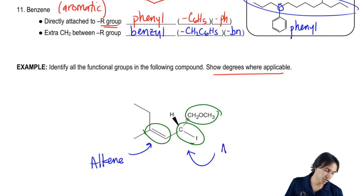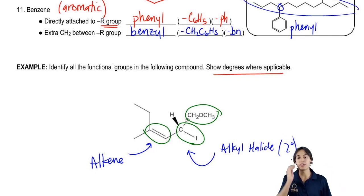So this would be an alkyl halide and particularly it would be a secondary alkyl halide. Why is that? Because it's attached to two carbon groups. The carbon here, remember that iodine, it would be named as a hydrogen. So I would count one carbon, two carbons.